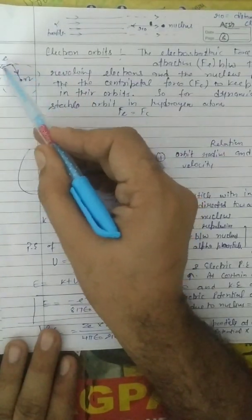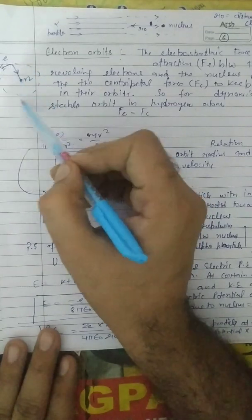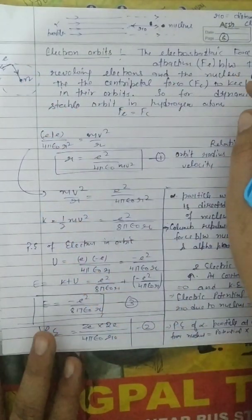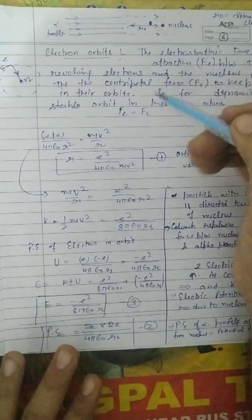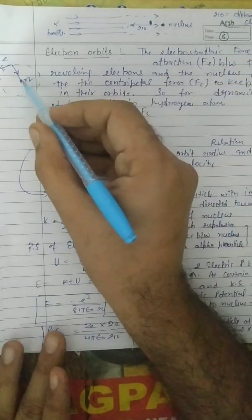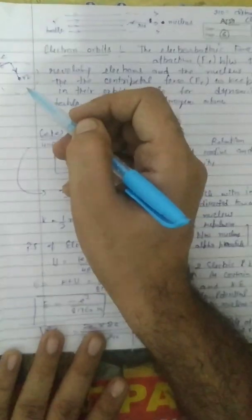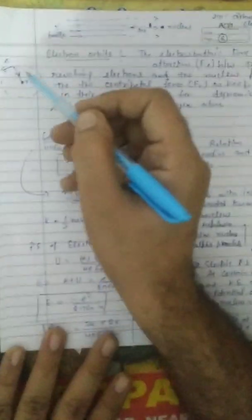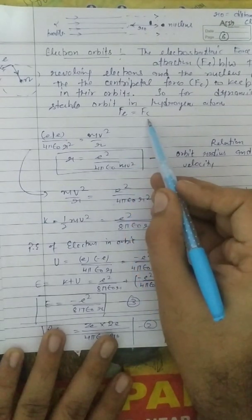In the case of hydrogen, the nucleus carries a positive charge equivalent to one proton, and the electron carries a negative charge. Since any atom must be stable, the force of attraction is equal to the centripetal force.